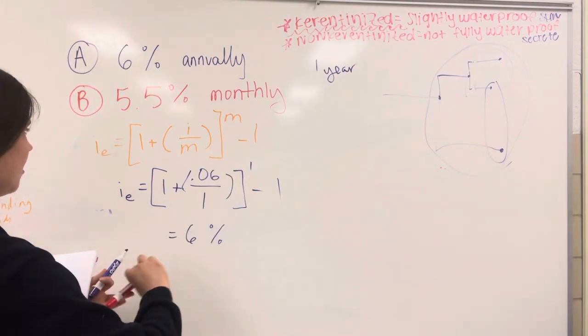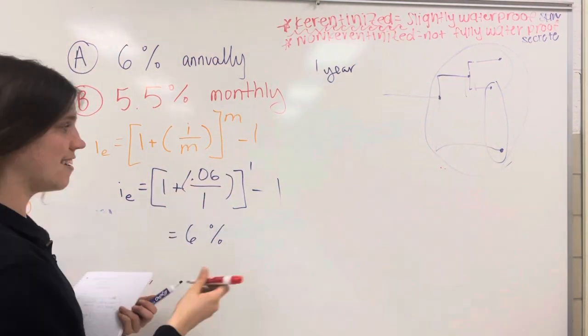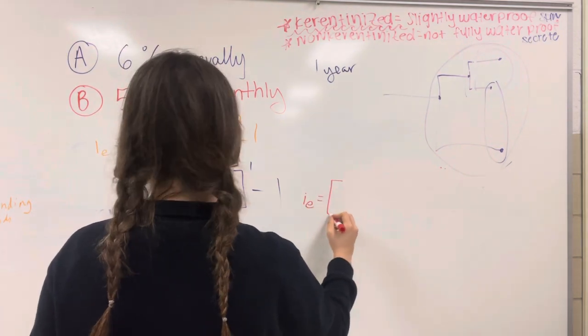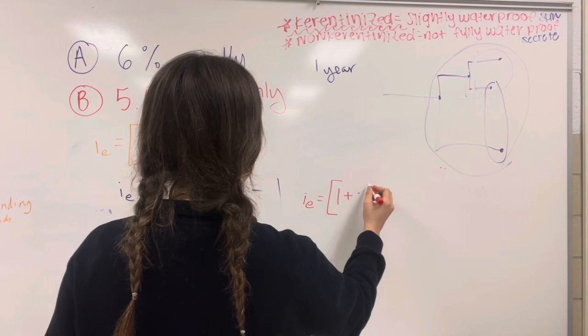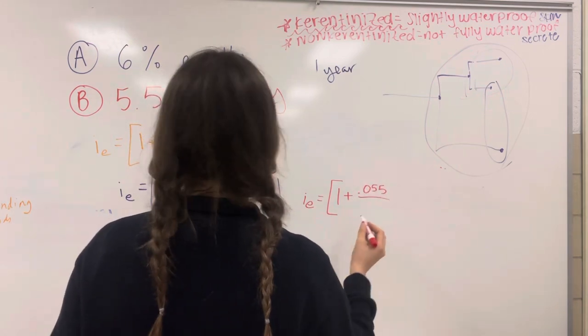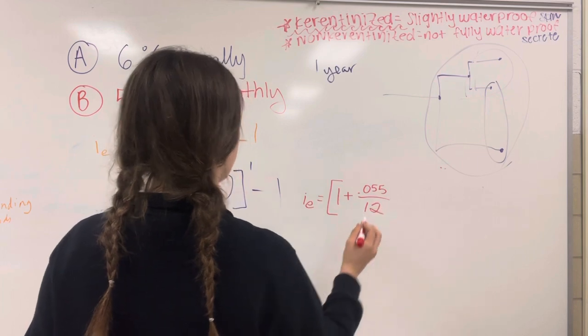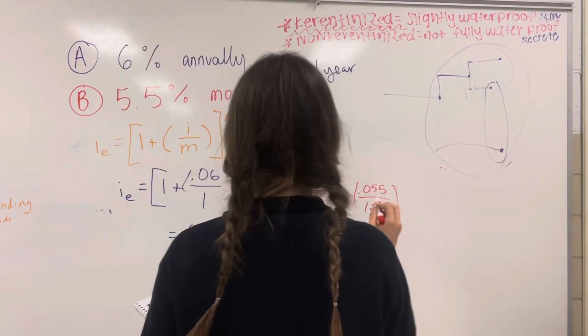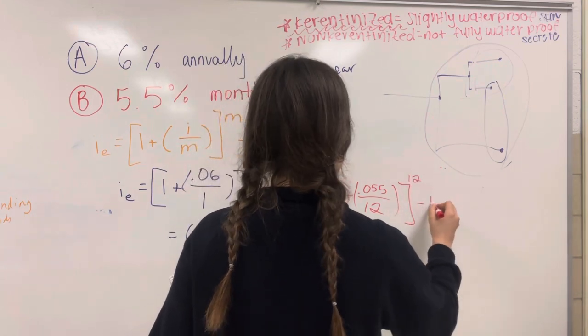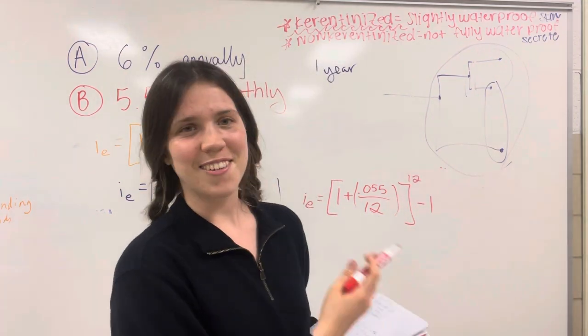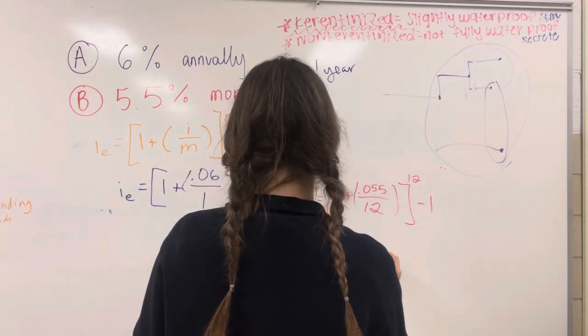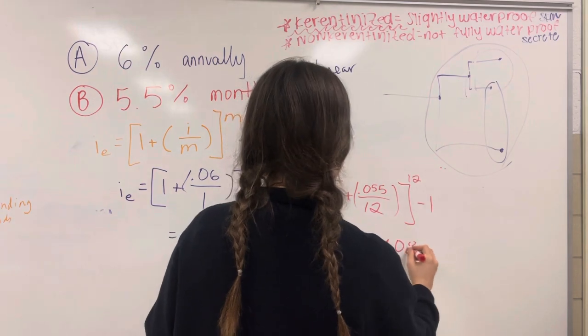But let's do this one now. Is it any better? Let's see. So 1 plus, then you're going to go 0.055 divide by 12, and then close that, to the 12th. And for the sake of time, I won't do all the math here. But you should be getting 5.6408%.